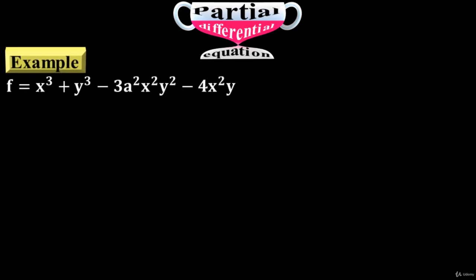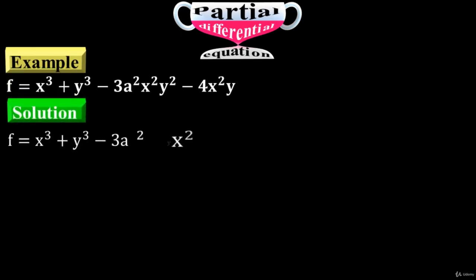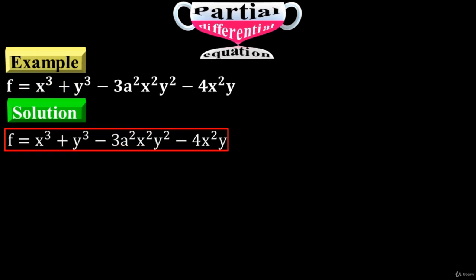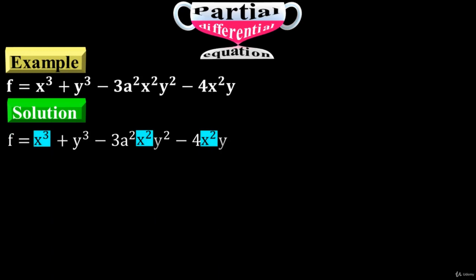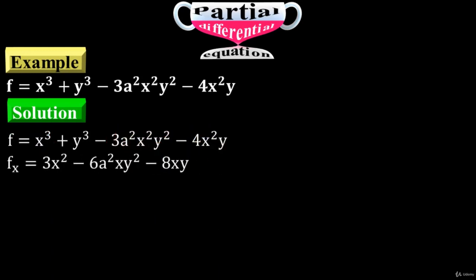Example: f equals x cubed plus y cubed minus 3a squared times x squared times y squared minus 4x squared times y. Differentiate the function f with respect to x first — the variable x exists at three places. Just differentiate these terms with respect to x to have f sub x equals 3x squared minus 6a squared times xy squared minus 8xy. Ignore y cubed because there is no x variable — the independent variable is x.